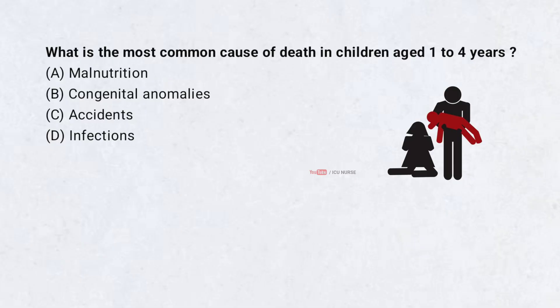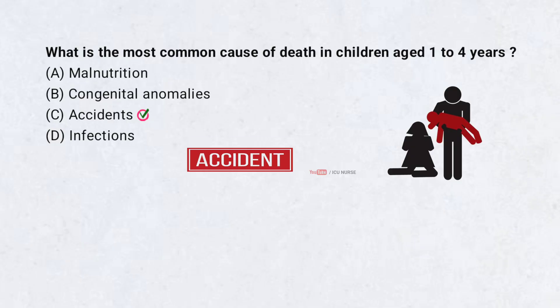What is the most common cause of death in children aged 1 to 4 years? A. Malnutrition. B. Congenital anomalies. C. Accidents. D. Infections. Correct answer: C. Accidents.